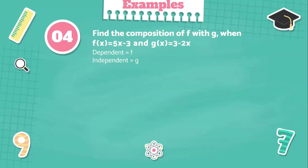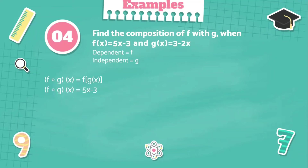Example number four: find the composition of f with g when f of x is equal to 5x minus 3 and g of x equals 3 minus 2x. In this example, our dependent function is f and our independent function is g. Solution: f circle g of x equals f of g of x. We're going to write the dependent function, which is 5x minus 3. The next step is to substitute the x of the dependent function by the independent function, so 5 times the quantity 3 minus 2x, minus 3.